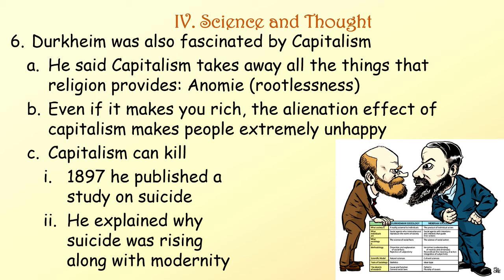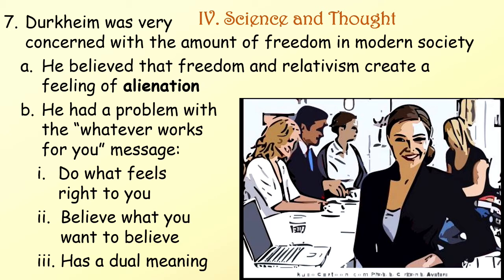He called this anomie — rootlessness. Even if capitalism does make you rich, the alienation effect of capitalism makes everybody extremely unhappy. And capitalism can kill. In 1897, he published a study on suicide and explained why suicide was rising along with modernity. Durkheim was very concerned with the amount of freedom in modern society. He believed that freedom and relativism create a feeling of alienation, and he had a real problem with the 'whatever works for you' message. All of that has a dual meaning for Durkheim.